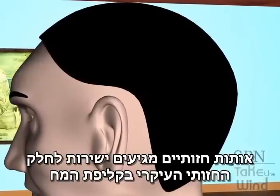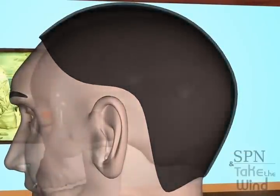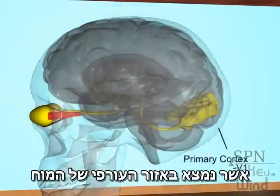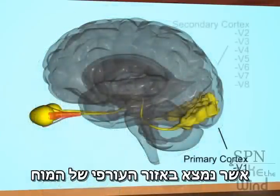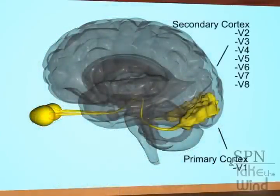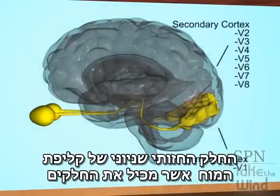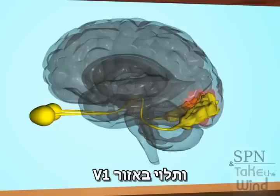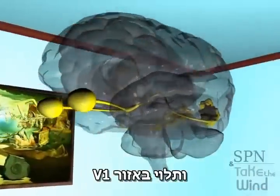Direct visual signals arrive into the primary cortex, called the V1 region, which is located in the occipital region of the brain. The secondary visual cortex, which comprises V2, V3, V4, V5, V6, V7 and V8 regions, depends on the V1 region.